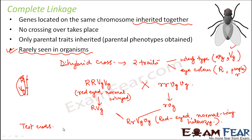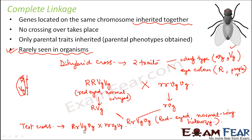In a test cross, the heterozygous is crossed with the homozygous recessive, so this will be crossed with rr vgvg. In this case, only two gametes are possible: capital R capital Vg and small r small vg, while the other parent gives only small r small vg.